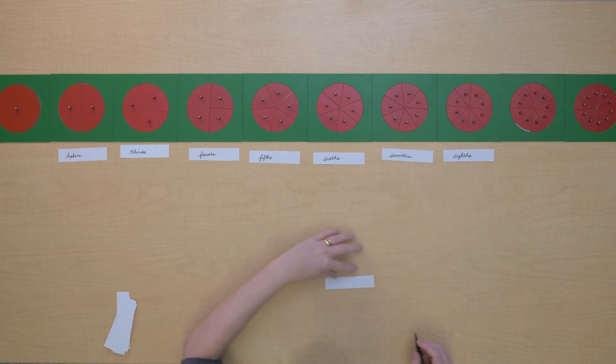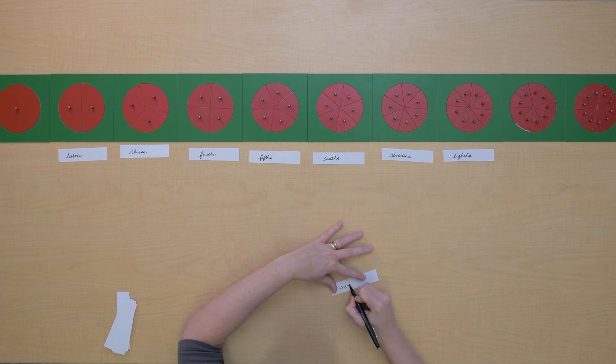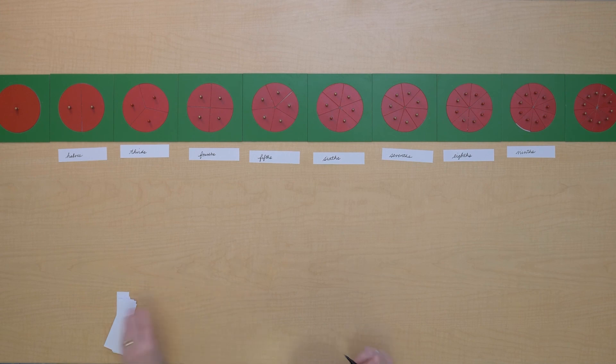Nine equal pieces gives us ninths. And then our last unit has ten equal pieces. So it's called tenths.